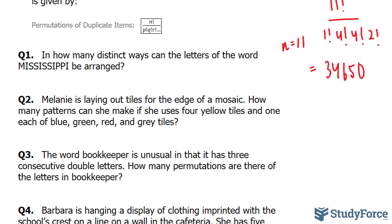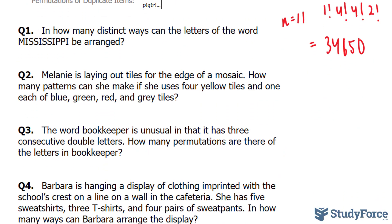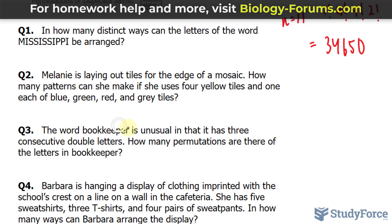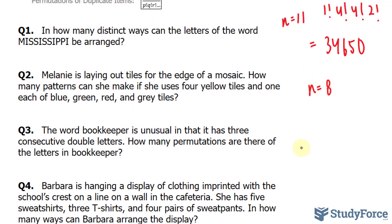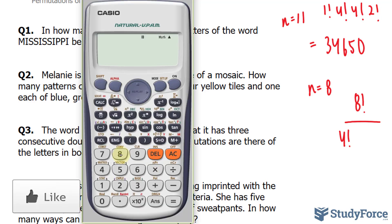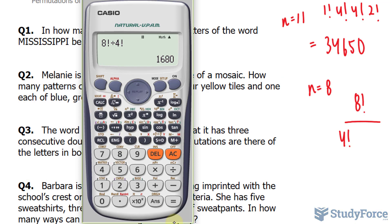Let's move on to question number 2. Melanie is laying out tiles for the edge of a mosaic. How many patterns can she make if she uses 4 yellow tiles and 1 of each blue, green, red, and grey tiles? So we have 4 plus 1, 2, 3, 4 — that's 8. n is equal to 8. Setting up our expression: 8 factorial over 4 yellows and 1 of each. We don't need to write down 1 factorial for each of these, so our answer is 8 factorial over 4 factorial. Using our calculator, 8 factorial divided by 4 factorial gives us 1,680 permutations — 1,680 different patterns with these 8 tiles.